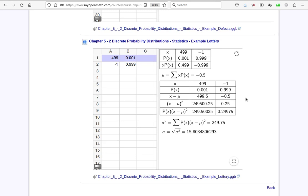Our last example of a discrete probability distribution comes from the lottery. In this case, there's a 1 in 1,000 chance of winning $500 for a ticket that costs $1.